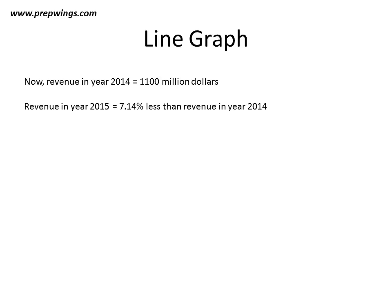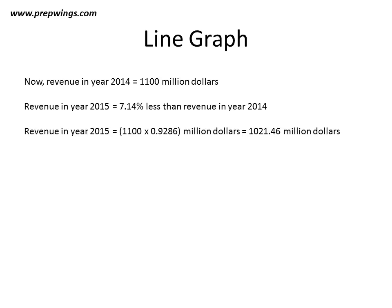Between 2011 and 2012 there was a percentage decline of 7.14 in the revenue, so revenue in year 2015 should be 7.14 percent less than the revenue in year 2014. Revenue in 2015 will be 1100 multiplied by 0.9286 — which is a decline of 7.14 percent on 1100 — giving 1021.46 million dollars. Thus revenue in year 2015 is 1021.46 million dollars.